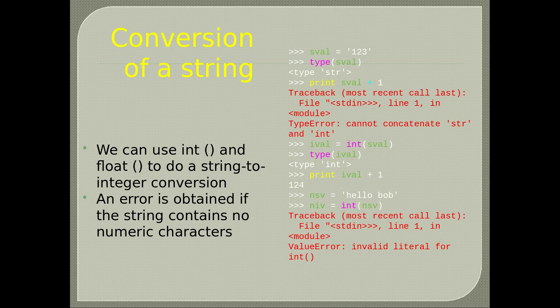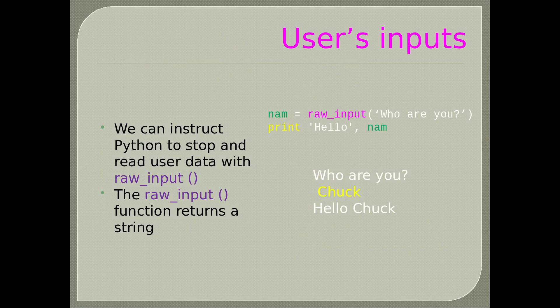In the case where we define a string nsv = 'hello bob', if we write niv = int(nsv) we will get an error since nsv is a string and not a number. How to accept user input: we can instruct Python to stop and read user data with raw_input(). The raw_input function returns a string. In Python 3 the same can be done with the input() function.